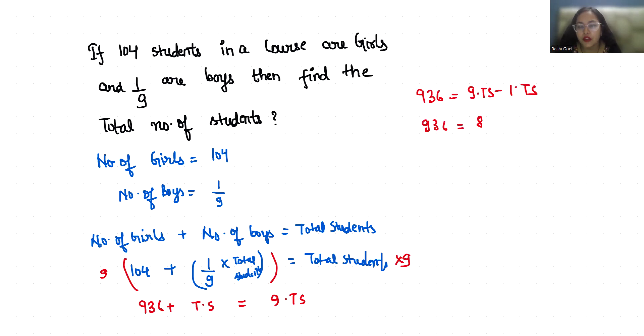Now to find total students I am going to divide both sides by 8. So total students equals 936 divided by 8, which equals 117. Now let's verify this.